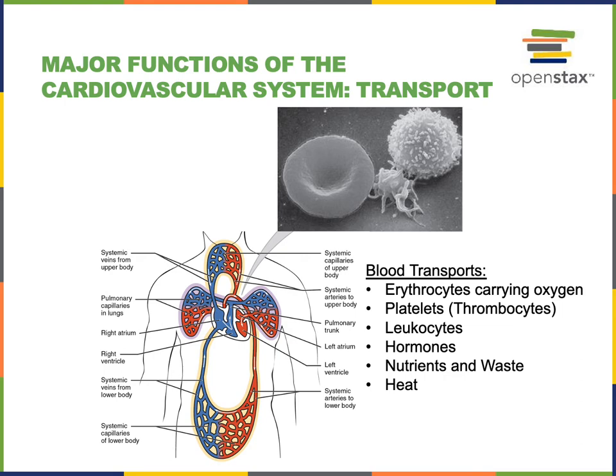Hormones are chemical messages secreted by endocrine glands into the blood, and the blood then transports hormones around the body to bring them to the target cells that are responding to the hormones.